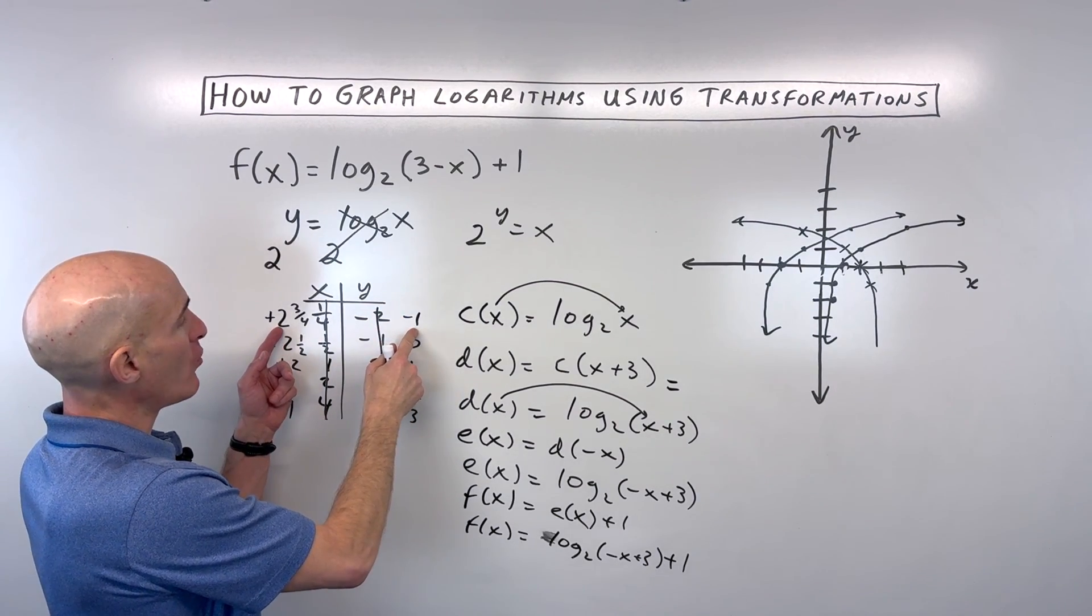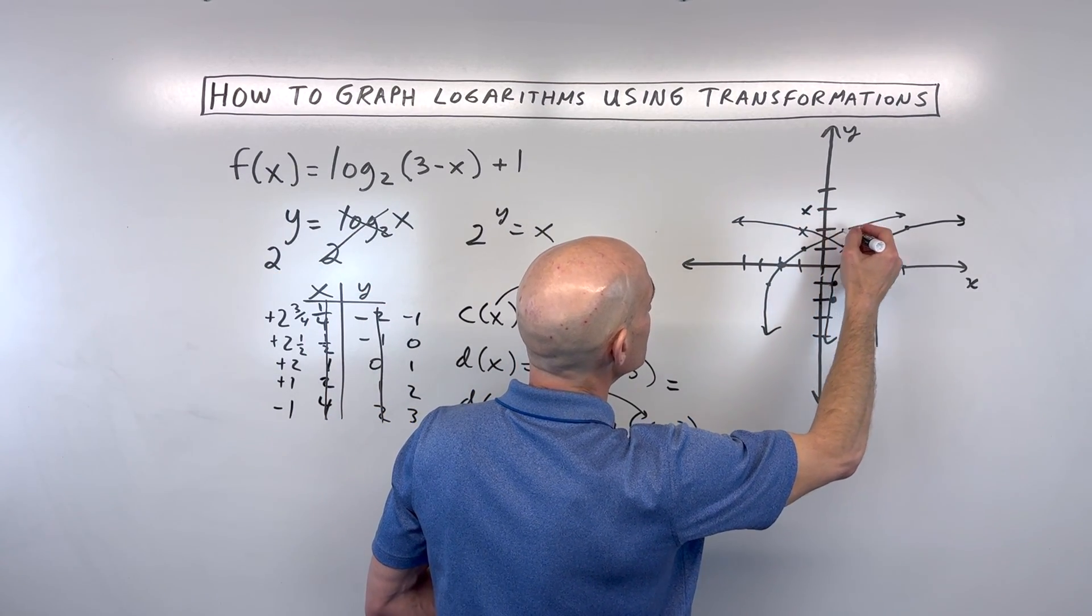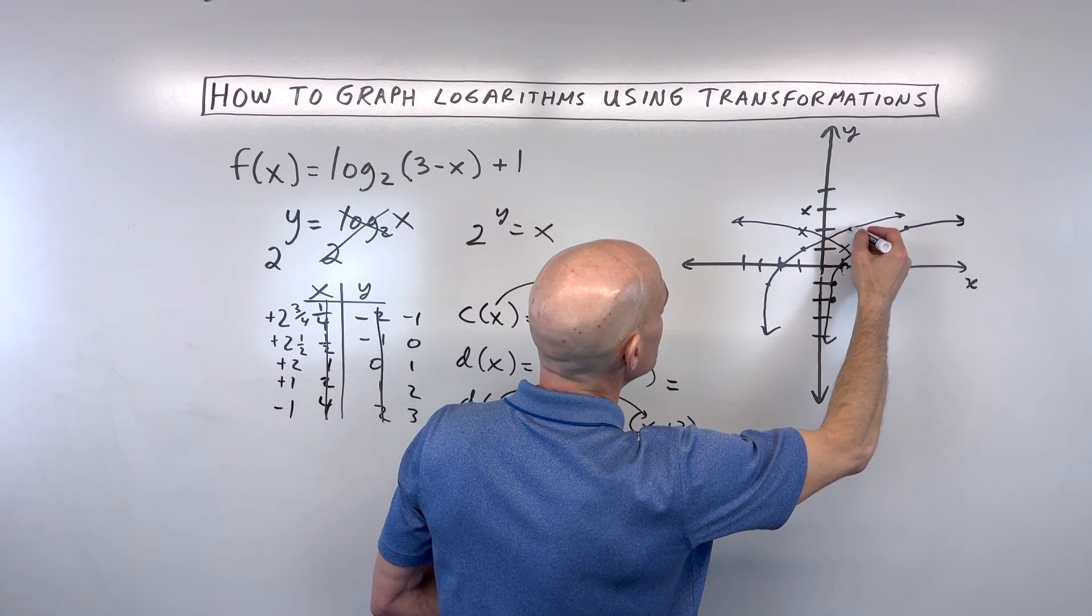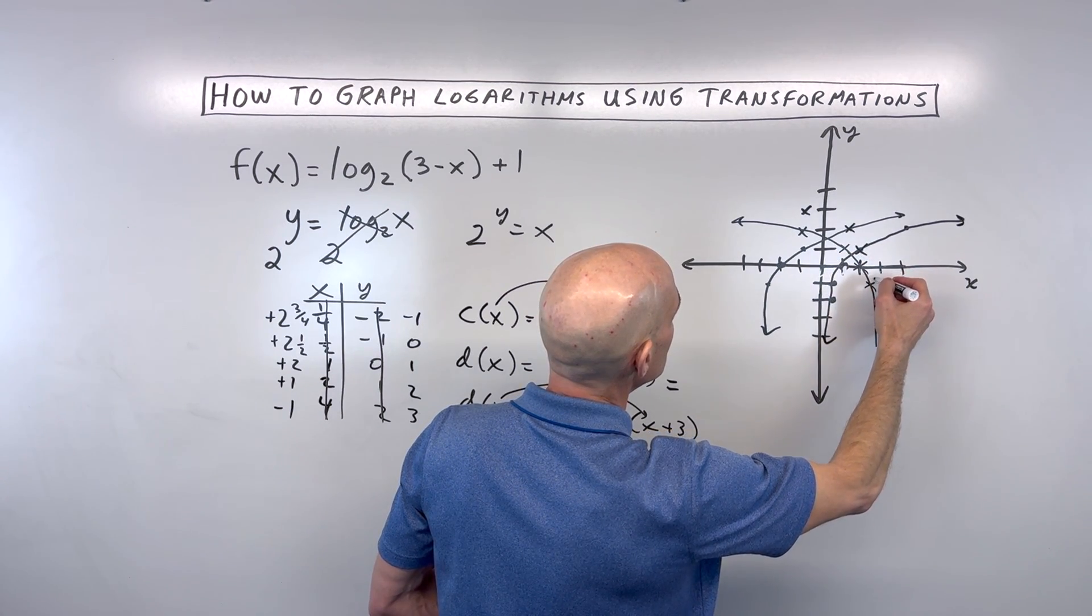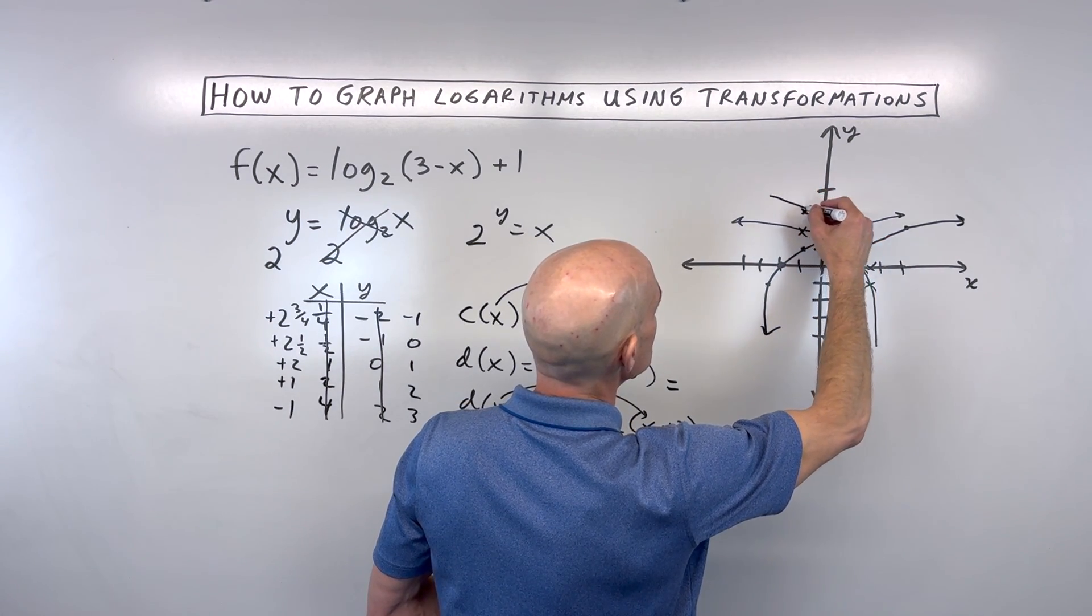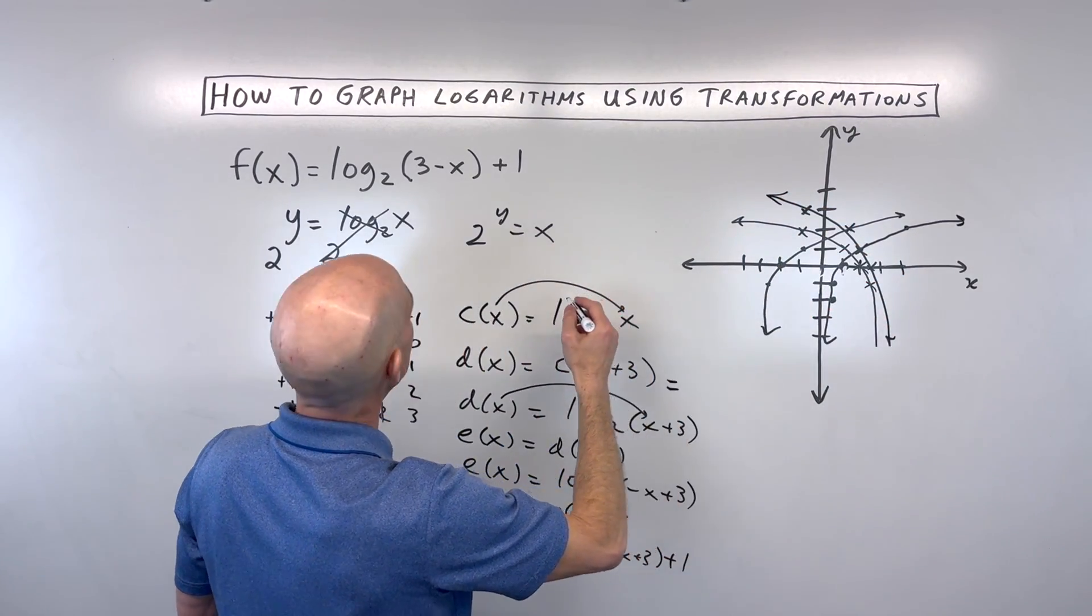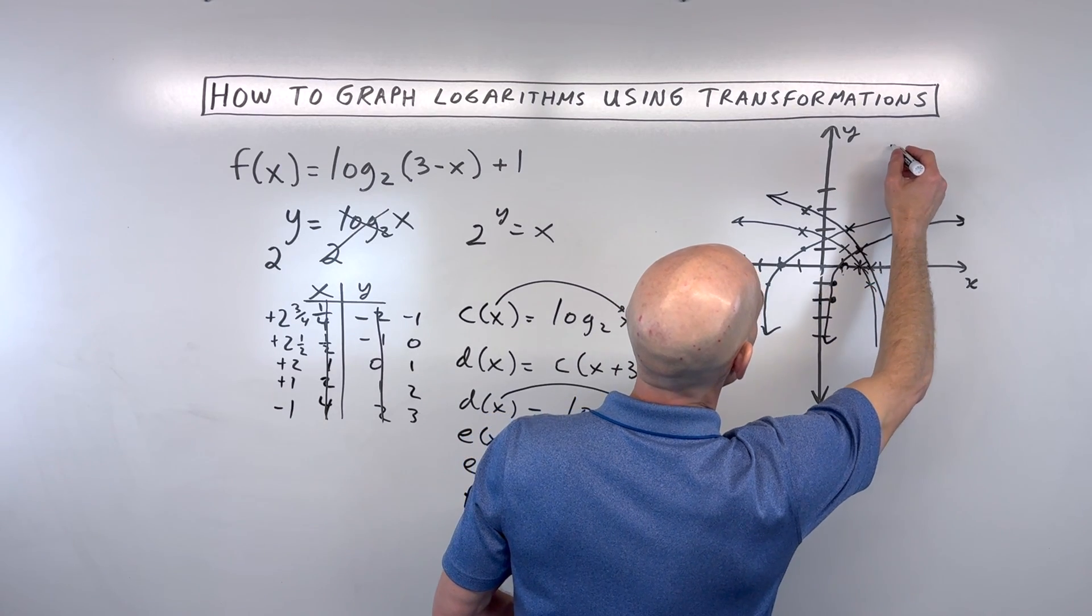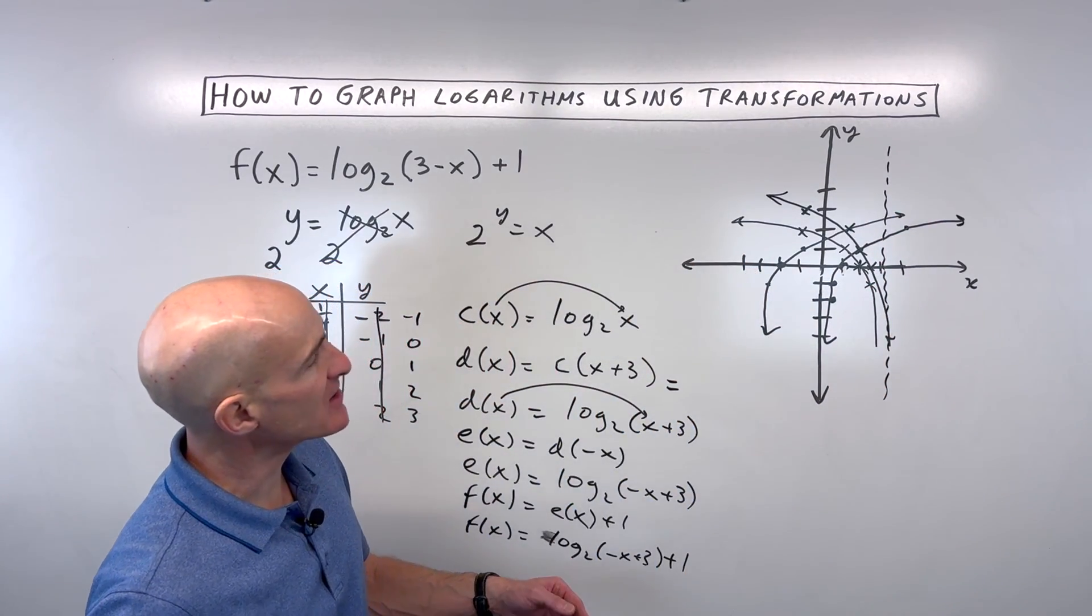And so now if we plot these points, we said we're just shifting up 1. I can just shift these all up 1 like this. So the graph is looking something like this now. And it's approaching this line here x equals 3. This is going to be our vertical asymptote. So it got a little bit messy there. But this is how you would use the transformations.